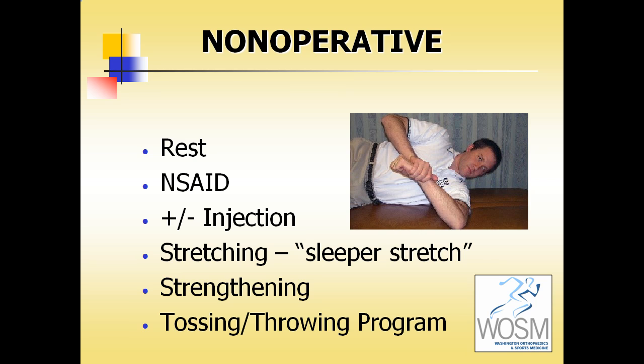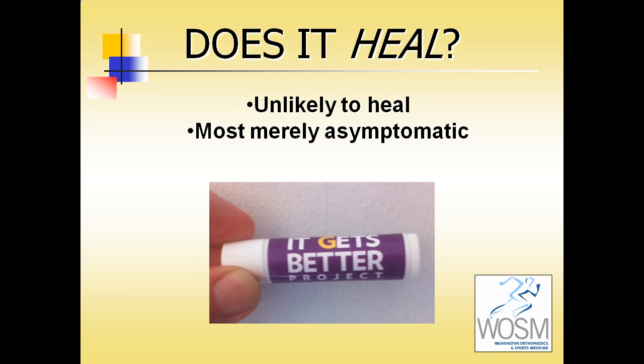There are a number of non-operative strategies for treating SLAP lesions. These include rest, anti-inflammatory medications, injections, the use of a sleeper stretch — particularly effective in throwers with a tight posterior capsule — strengthening of the cuff and scapular rotators, and eventually resuming a tossing or throwing program after activity modification. While SLAP lesions are unlikely to heal according to studies, many patients will become symptom-free.